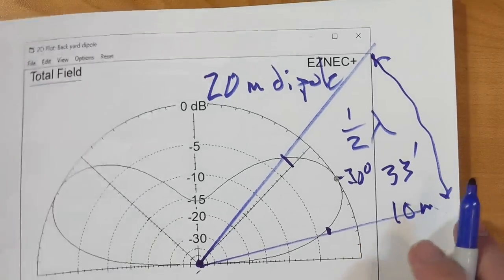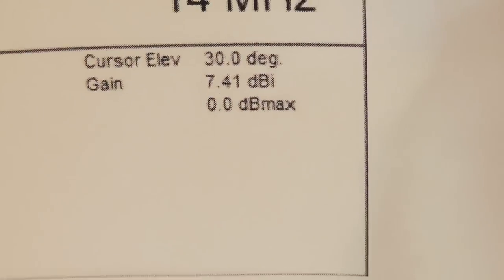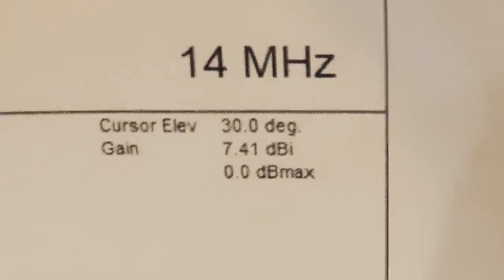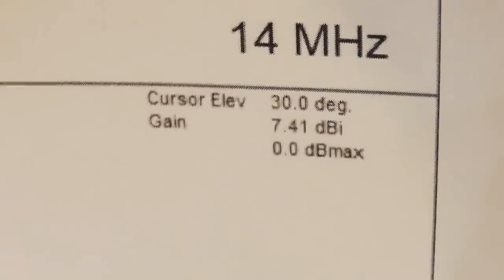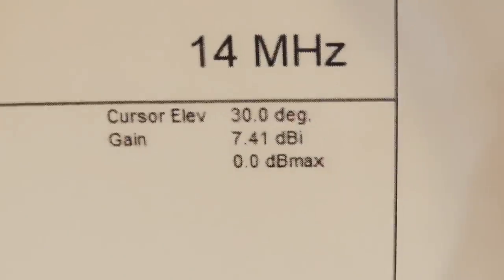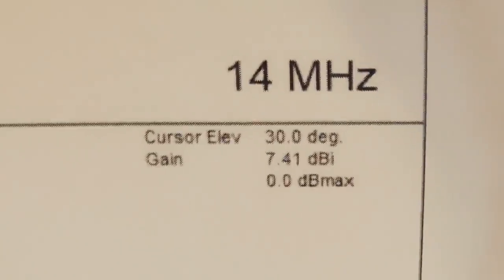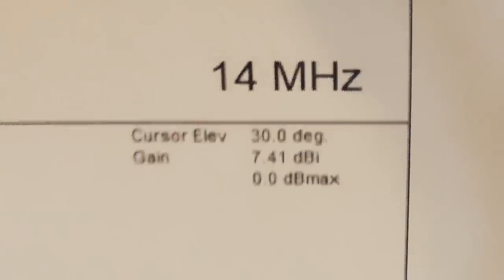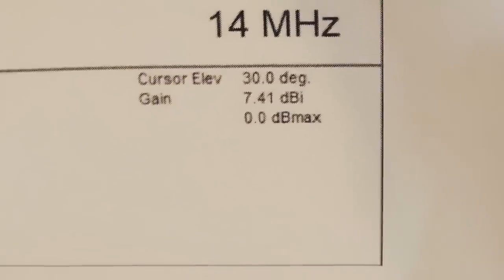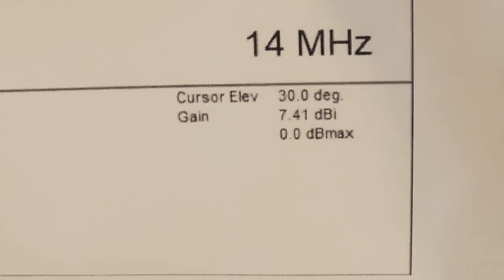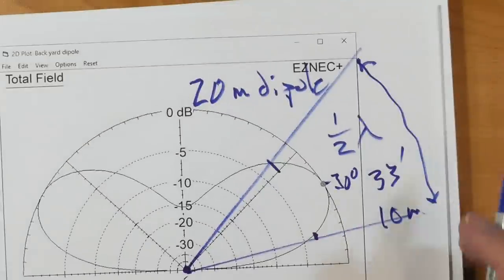Of course, you've got the same thing on the other side. One of the interesting things about this, if you look at the gain figure for a dipole, it's 7.41 dBi over an isotropic antenna. And normally, we think of a dipole as 2.1 over an isotropic antenna.